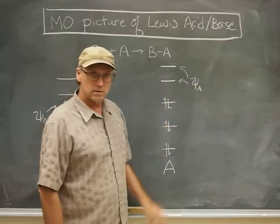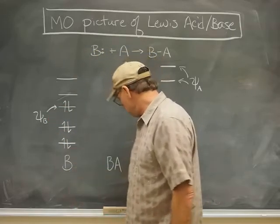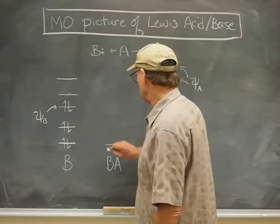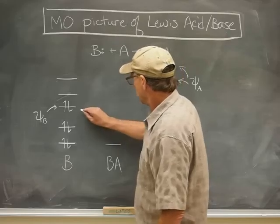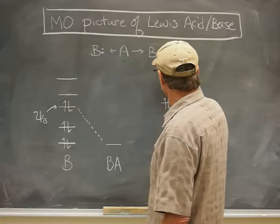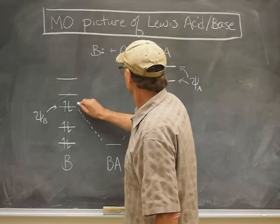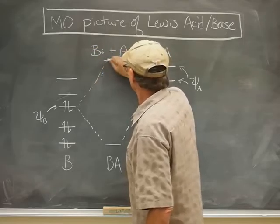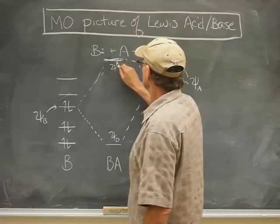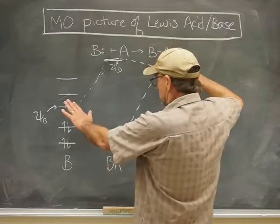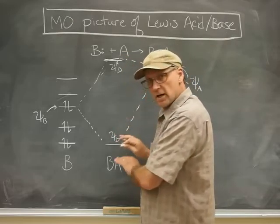I'm going to give that orbital of the acid the symbol PsiA, and the occupied orbital of the base I'll call PsiB. Now I'm going to draw a hypothetical set of energy levels for the adduct. PsiB interferes constructively with PsiA to produce a new molecular orbital of lower energy, and also forms a destructive interference — an antibonding orbital. We'll call these PsiD and PsiStarD, for dative bond.